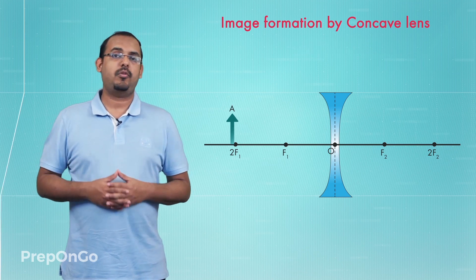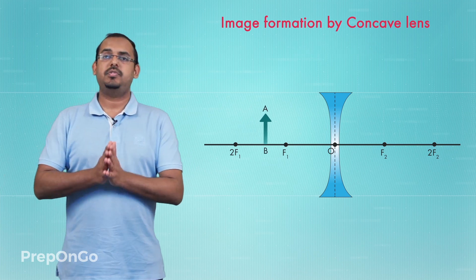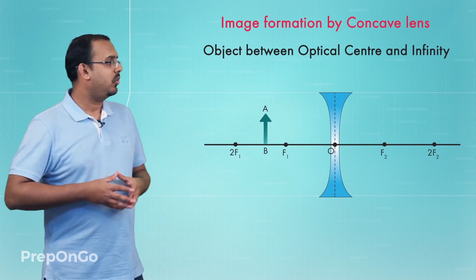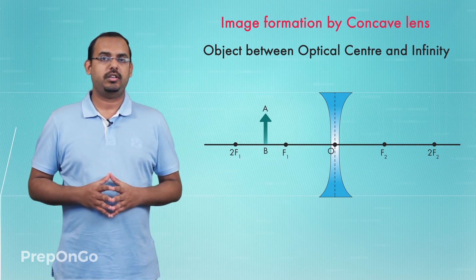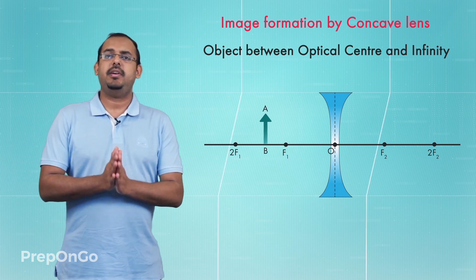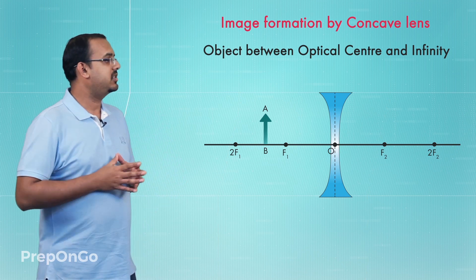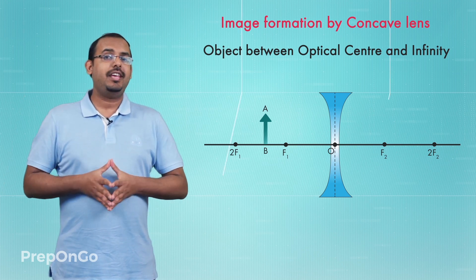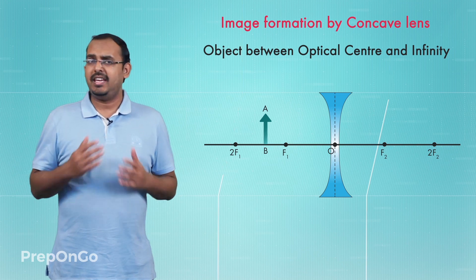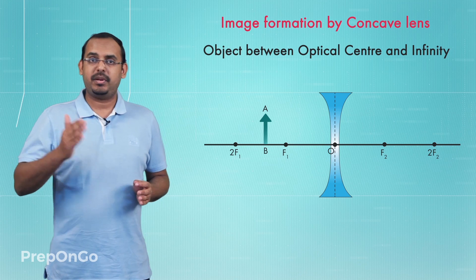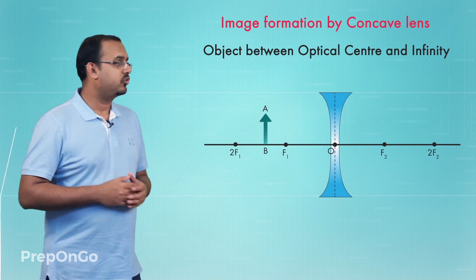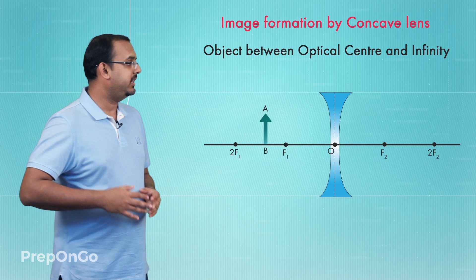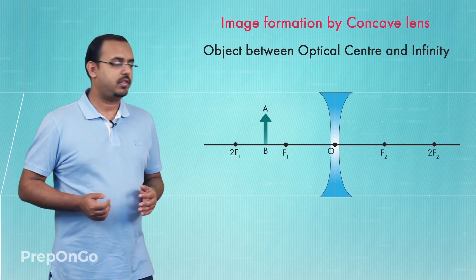Now we'll move on to the second image formation case with a concave lens, where we move the object closer. As we move the object closer, the image starts to move closer to the concave lens as well — towards the optical center. This means a concave lens never forms an image beyond the principal focus; the image always forms between the optical center and the principal focus, or at the focus.